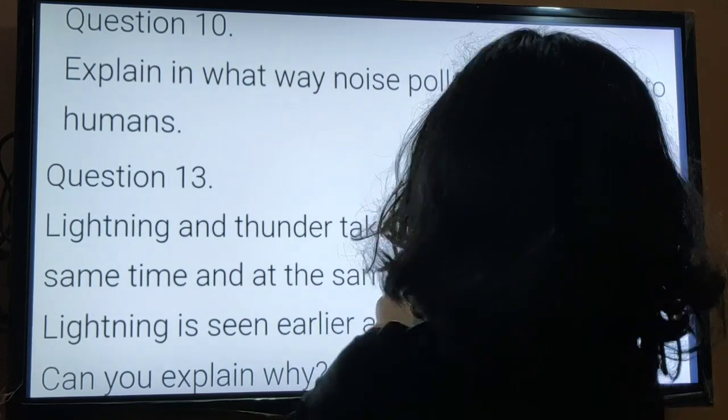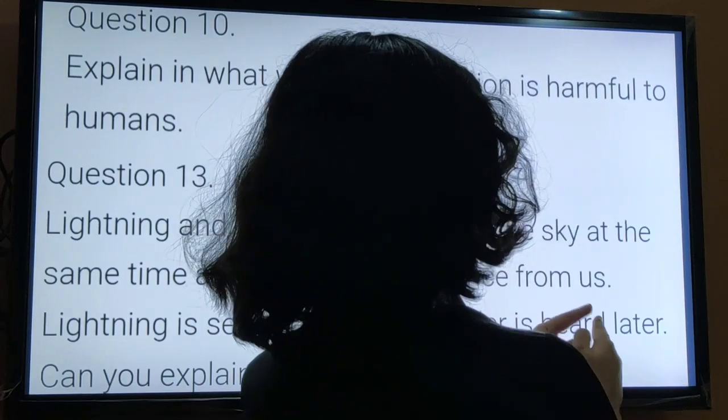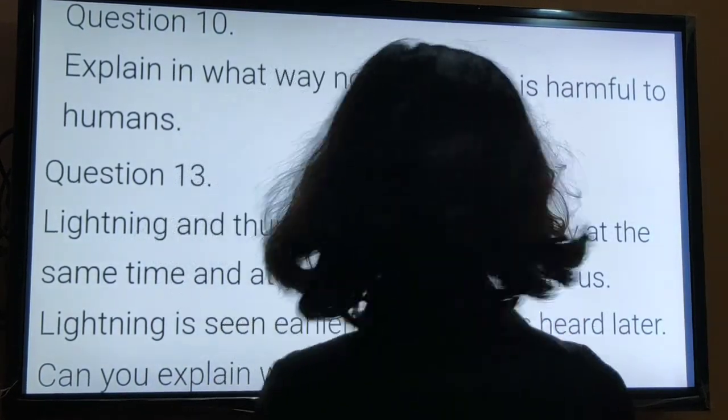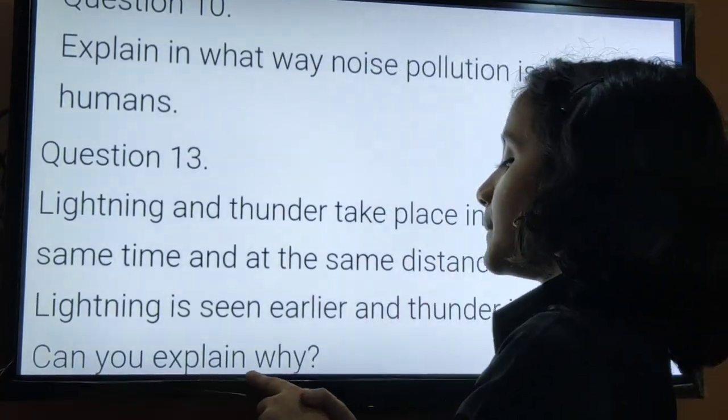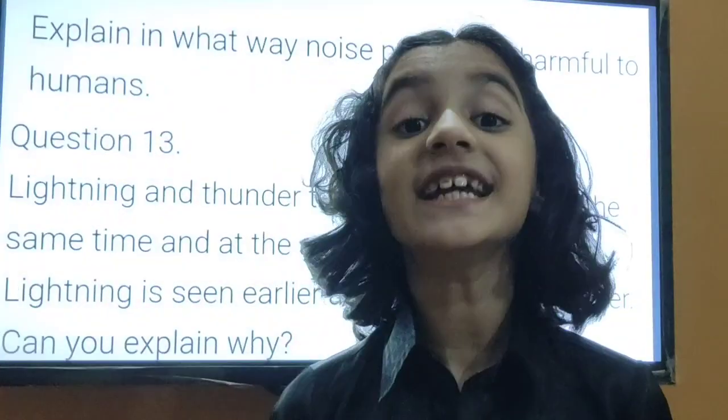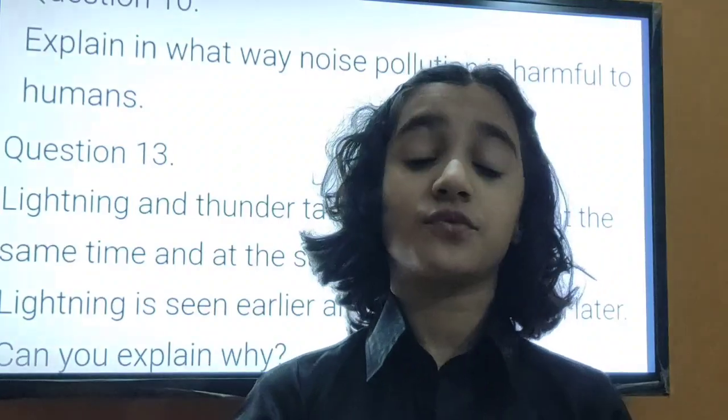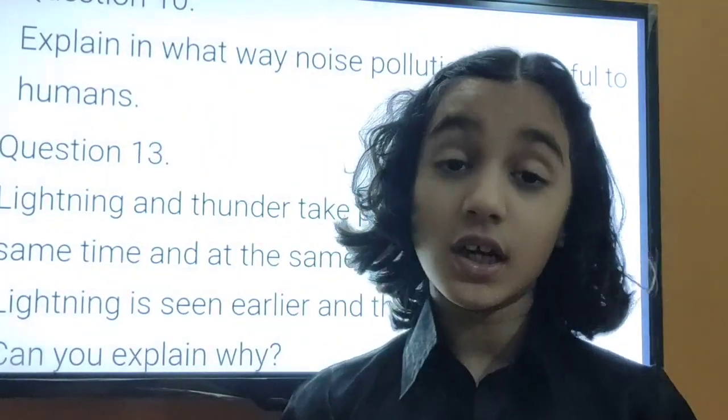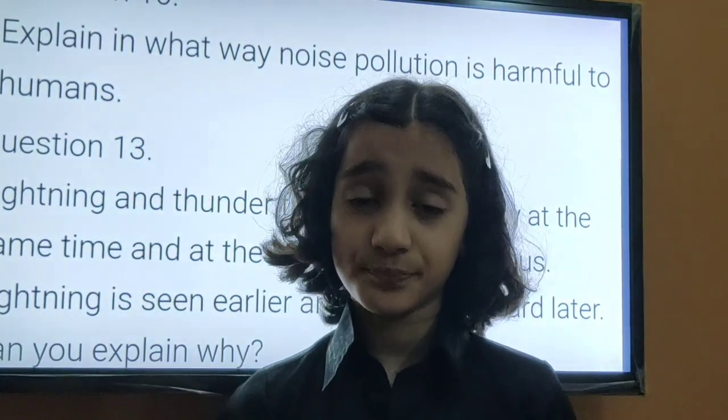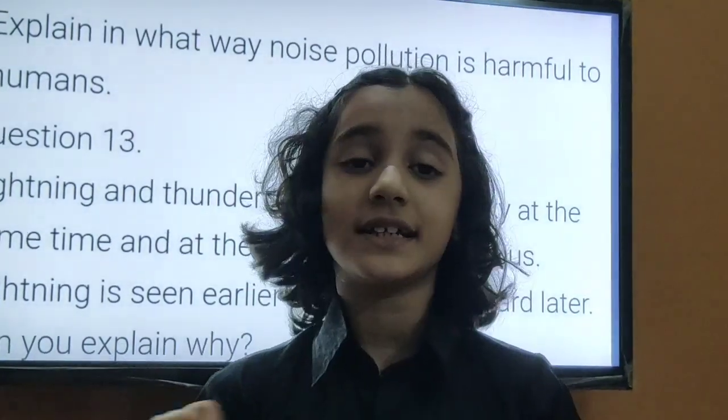Question number 13, lightning and thunder take place in the sky at the same time and the same distance from us. Lightning is seen earlier and thunder is heard later. Can you explain why? The speed of light is more than that of the speed of sound. Thus, due to more speed of light, it reaches us before sound. So, lightning is seen earlier and thunder is heard later.